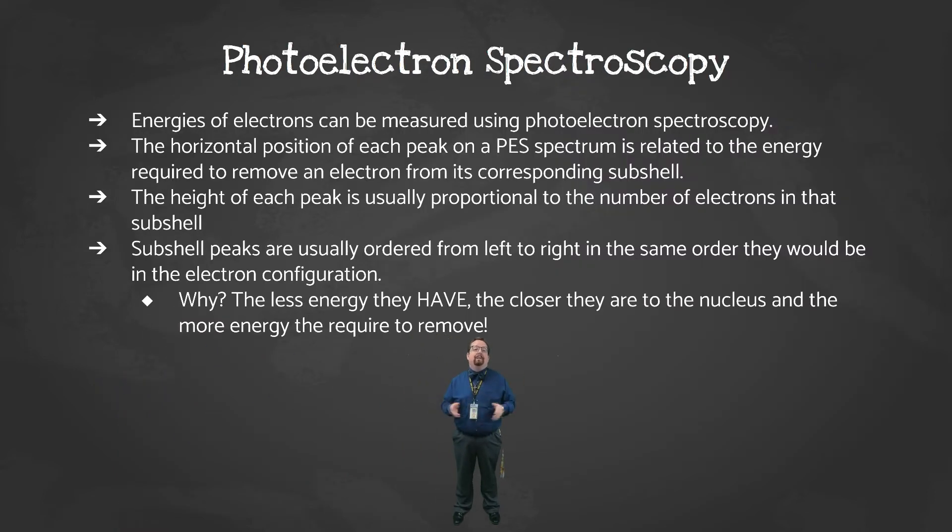Something that's completely new to you this year is photoelectron spectroscopy. This is how we quantitatively determine and measure the electron configuration of an element. We can directly measure the binding energy of electrons using a photoelectron spectrometer. The graph we get from this shows various peaks. The horizontal, or left-to-right, position of each peak is related to the energy required to remove an electron from its subshell. And the height of each peak is proportional to how many electrons are in that subshell. It may seem odd, but we graph the x-axis backwards so that the electrons that require the most energy to remove, and the ones that are closest to the nucleus, are on the left. This puts our peaks in the same order as the electron configuration goes.